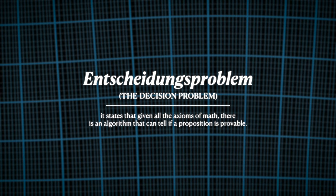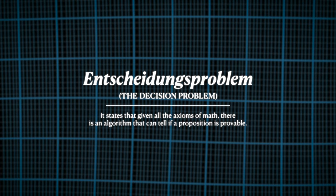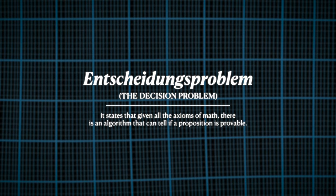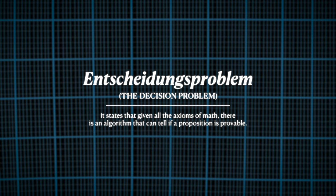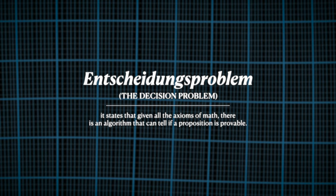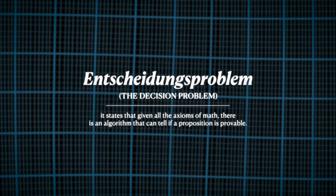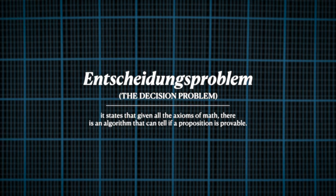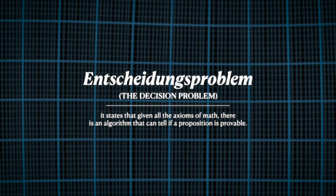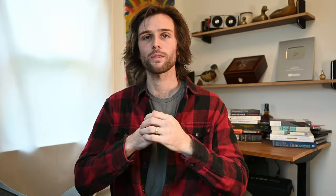The Decision Problem is a question of mathematical logic that asks whether there exists a method or algorithm that can determine whether any given statement in a formal system is true or false. In other words, it is asking whether the formal system is decidable. Although, technically, the Entscheidungsproblem, while it is German for Decision Problem, is not the same.